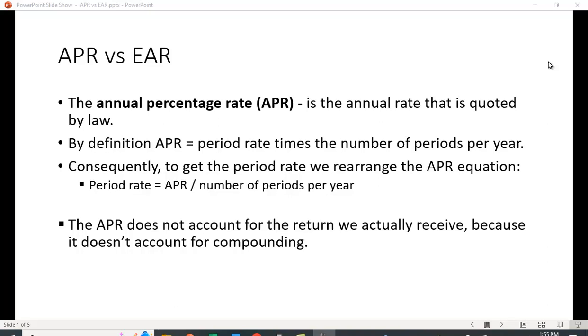By definition, the APR equals the period rate times the number of periods per year. Consequently, if we know what the APR is, we can figure out what the periodic rate is by dividing by the number of periods. Now, the problem with APR is it does not account for the return we actually receive because it doesn't account for compounding.